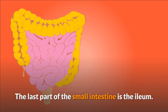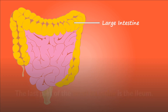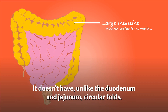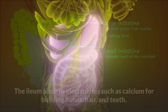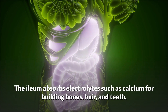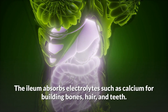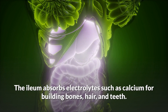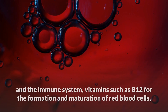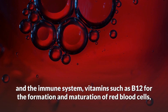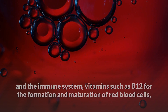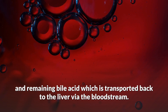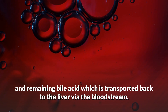The last part of the small intestine is the ileum. Unlike the duodenum and jejunum, it does not have circular folds. The ileum absorbs electrolytes such as calcium for building bones, hair, and teeth; trace elements such as zinc for sperm production and the immune system; vitamins such as B12 for the formation and maturation of red blood cells; and remaining bile acids, which are transported back to the liver via the bloodstream.